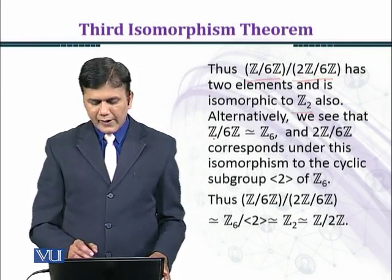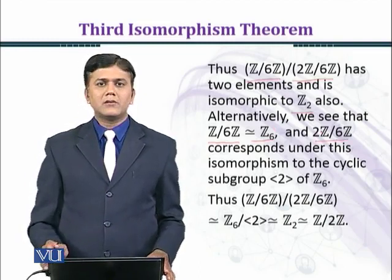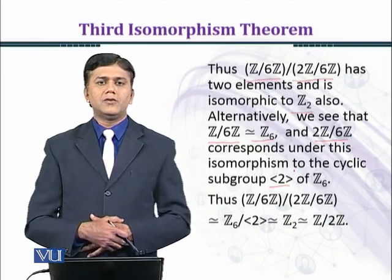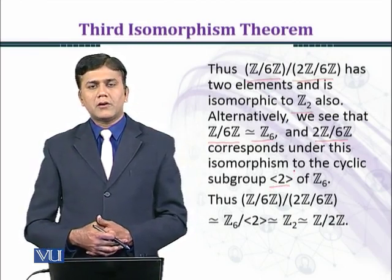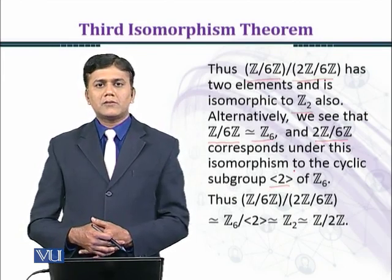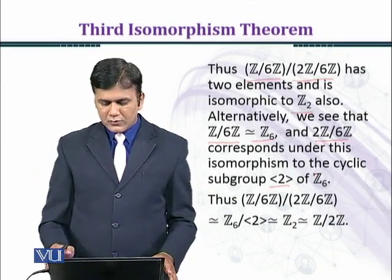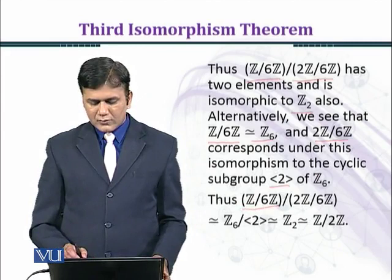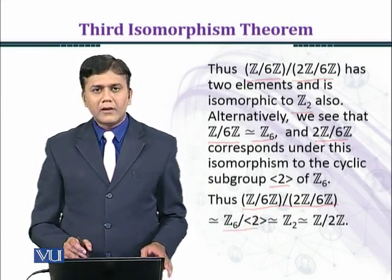Alternatively, Z over 6Z is isomorphic to Z₆, and 2Z over 6Z corresponds under this isomorphism to the cyclic group generated by class 2 in Z₆. The class 2 generates the classes 2, 4, and 0, so inside Z₆ there are a total of three elements in that subgroup. Thus Z/6Z over 2Z/6Z is isomorphic to Z₆ over the subgroup generated by class 2.